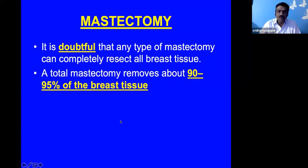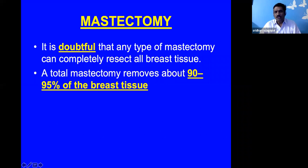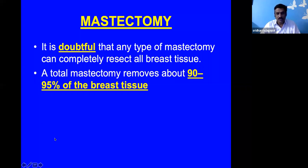Now we move from conservative breast surgery to mastectomy, which forms the bulk of cases we treat. It is generally impossible to resect all breast tissue since it extends to the axillary tail and sometimes crosses the midline. Approximately 90–95% of breast tissue is removed during mastectomy; what remains is handled with chemotherapy or radiotherapy.